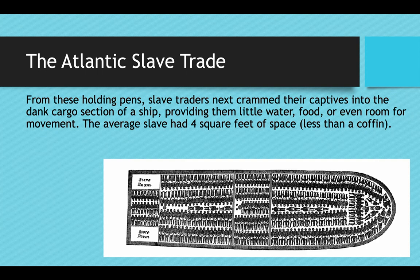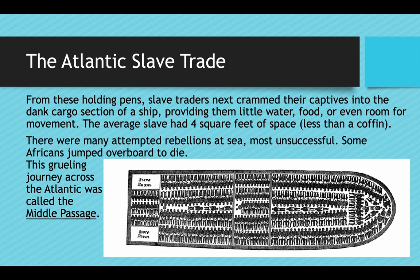They would be crammed into the dank cargo sections of these slave ships, packed in like sardines. As shown in the aerial view of a slave ship, the average slave had just four square feet of space — literally shoulder to shoulder, sometimes chest to back, almost like spoons. Four square feet is less than a coffin. Unless you were a very small person or a child — and yes, sometimes children were taken — you would be incredibly cramped the entire time.